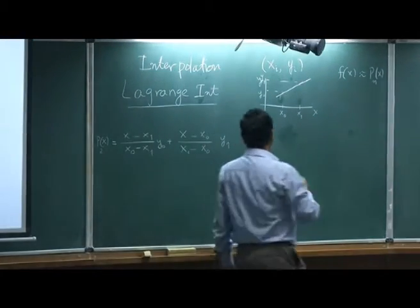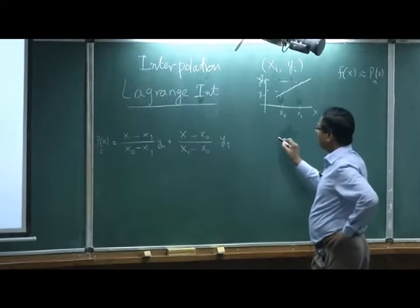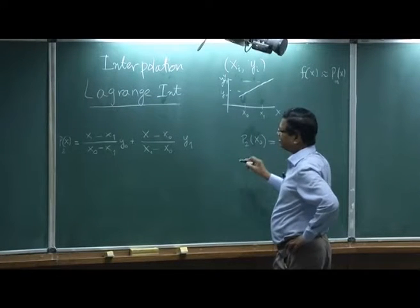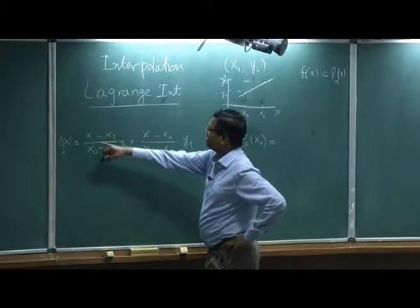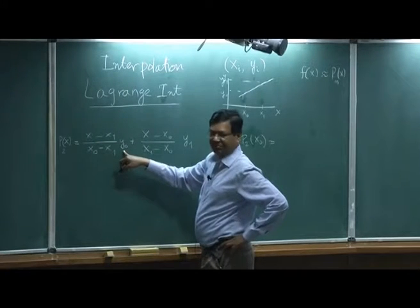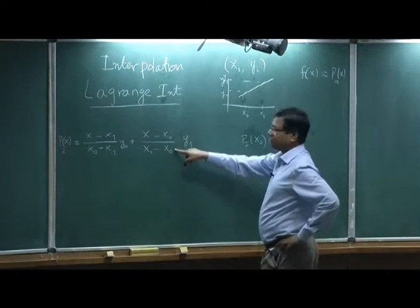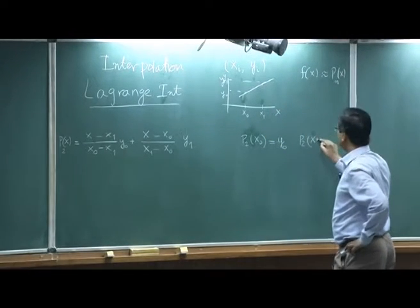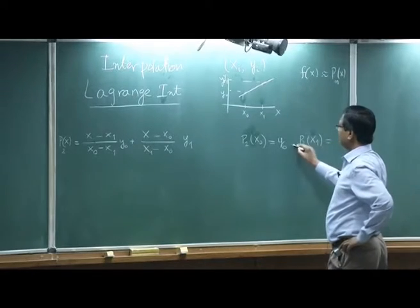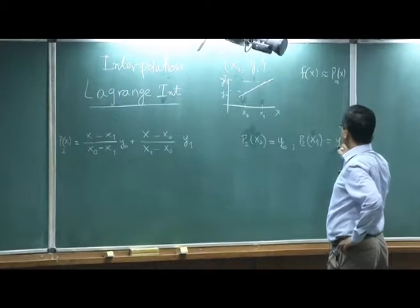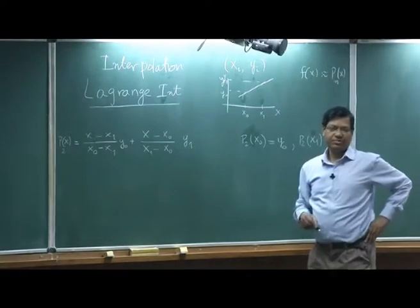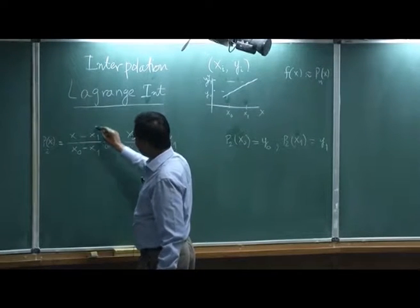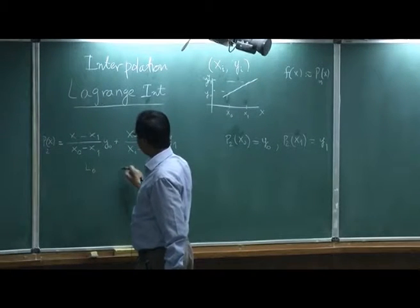We can easily see the properties of this function: p2 at x0, if you put x equal to x0, this term becomes 1 times y0 and the other becomes 0. And p2 at x1 gives y1. That is satisfied. This part of the function we call l0 and l1.